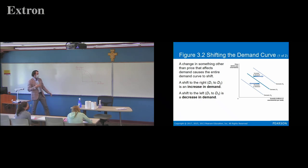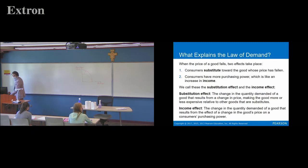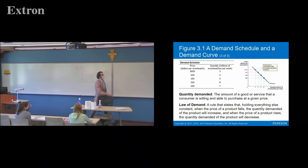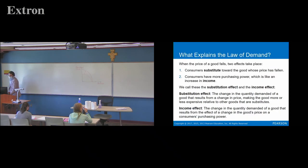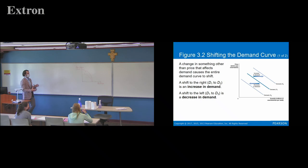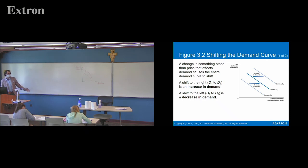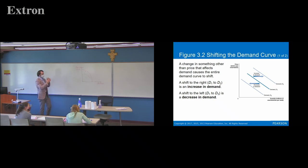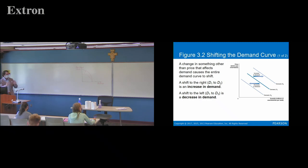Obviously price will move you along the demand curve. If the price drops from $450 to $400 we're going to move along the demand curve from 3 million to 4 million. But more than just price can change, and when something besides price changes, that'll cause the entire demand curve to shift. Shifting to the right is an increase in demand; shifting to the left is a decrease in demand. The curve in the middle is D1, the one to the right is D2 for an increase, and shifting to D3 on the left is a decrease.